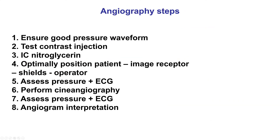Angiography involves eight steps. Step one is to ensure that there is good pressure waveform. Step two is to give a small test contrast injection. Step three, give intracoronary nitroglycerin. Step four, optimally position the patient, the image receptor, the shields, and the operator. Step five, check the pressure and the EKG. Step six, perform the actual cine angiogram. Step seven, check the pressure and the EKG once again, as in step five. And step eight is to interpret the angiogram.